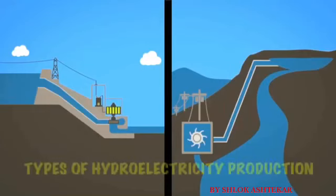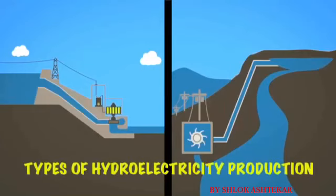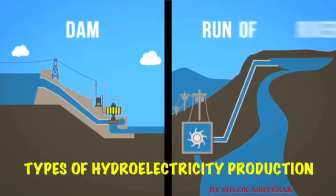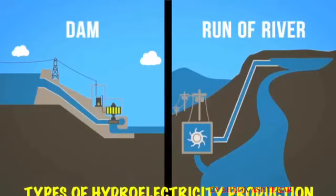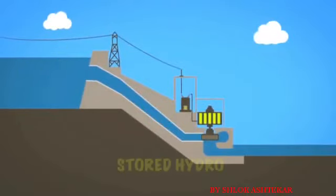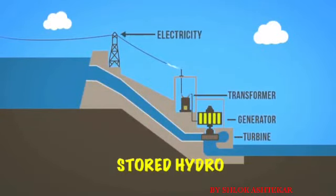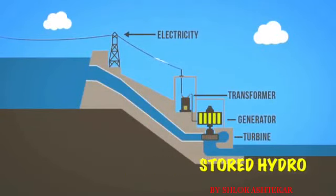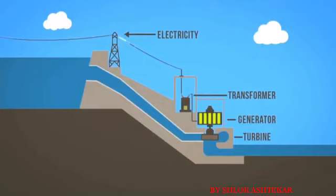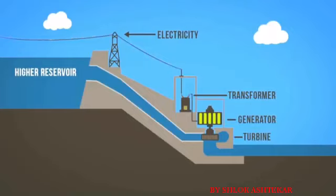There are two main types of hydroelectricity production: dams and run of river. Hydro dams utilize the potential energy from dammed water to produce electricity. A dam is a large barrier constructed to raise the level of water and control its flow. The elevation created by the dam creates gravitational force for turning the turbine when water is released.